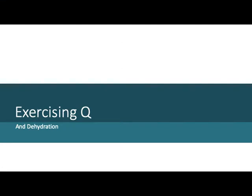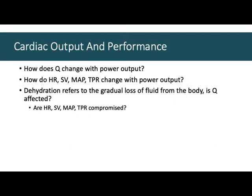A few brief slides to round out this section on how cardiac output should change with exercise, and then why we're using dehydration to affect cardiac output. You've seen in lab that values during exercise will change: VCO2 changes, percent CO2 changes, and those values, when used to calculate cardiac output, mean that cardiac output changes. Of course it does — heart rate and stroke volume go up, so the flow rate has to go up.